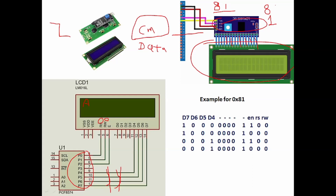So to write 0x81: first write upper nibble 8 with RS=0, RW=0, Enable high, then Enable low. Then write lower nibble 1 with RS=0, RW=0, Enable high, then Enable low. This whole cycle writes 81 to the LCD. If you have 10 commands, you repeat this process 10 times.